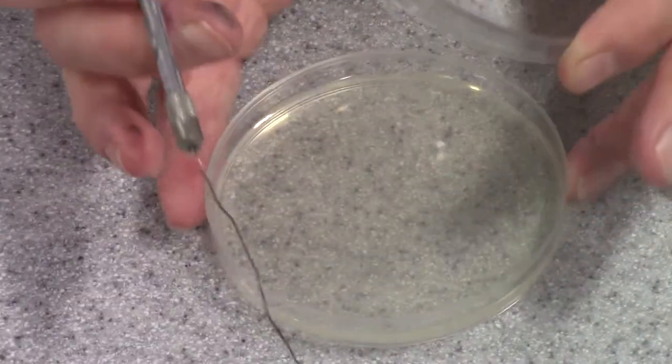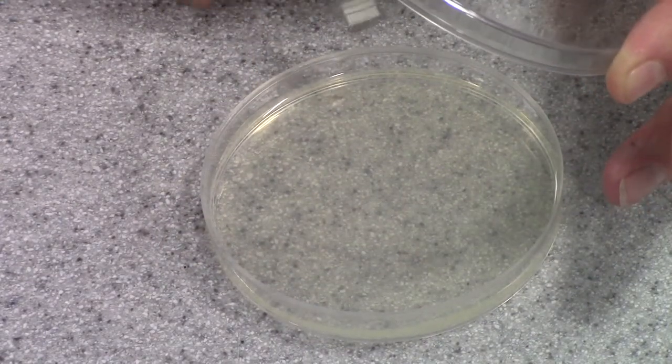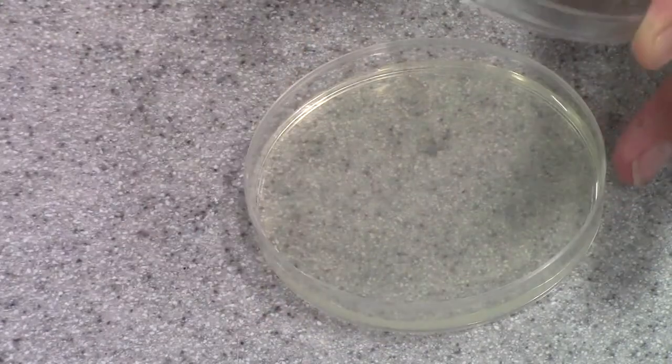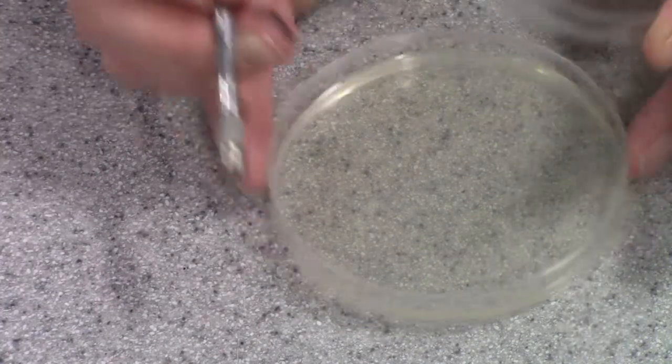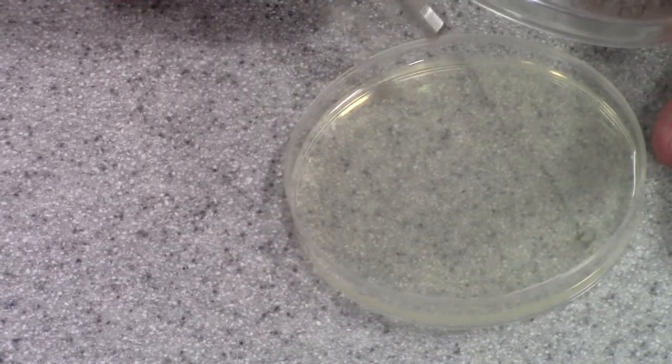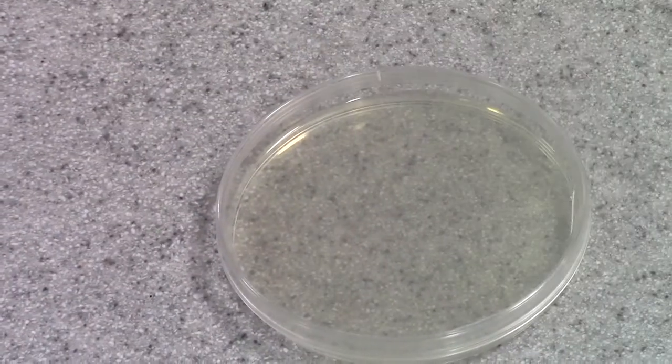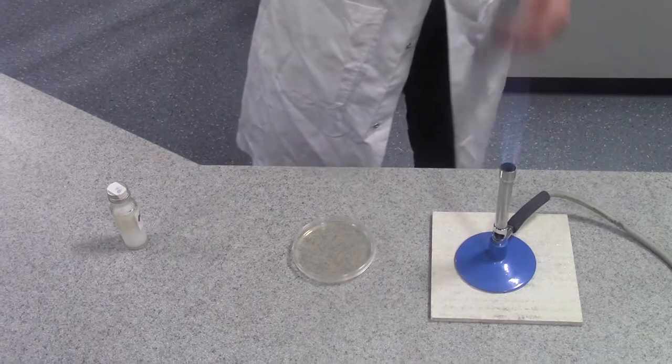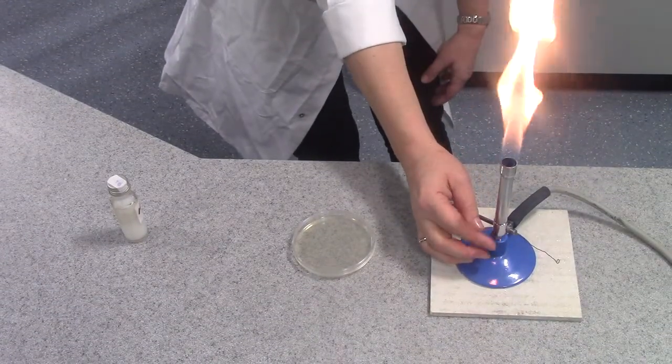You can then turn the dish to 45 degree angle and repeat the process. You'll then turn the dish again by 45 degrees, repeat the process, and then finally by 45 degrees, and just drag into the middle of the plate. Replace the lid, re-flame the wire loop, allow it to cool, and then put the Bunsen burner back on the safety flame.